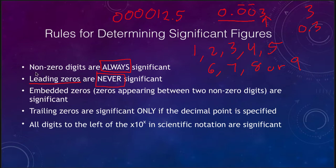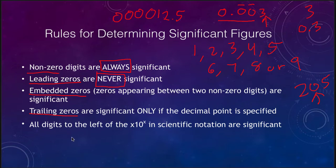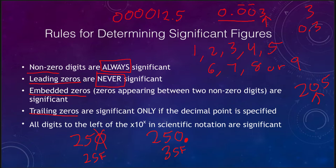We can also have embedded zeros — any zero in between two non-zero numbers. That is always significant because it is in between. We can also have trailing zeros, which are only significant if the decimal point is specified. So 250 — the zero is not significant — but 250. with the decimal point specified has three significant figures. If we specify the decimal point, the trailing zeros are significant.